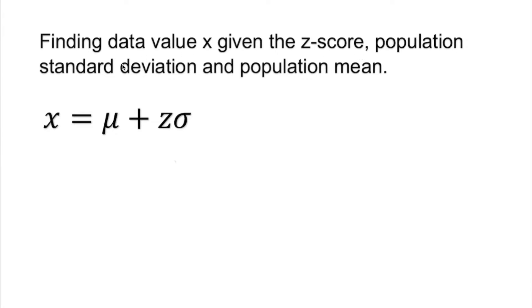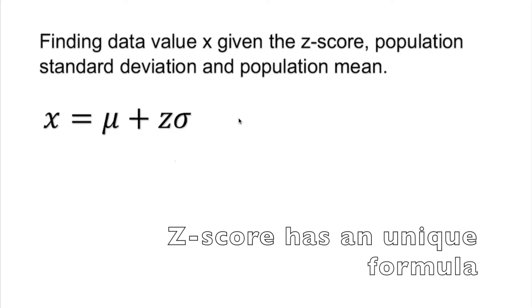Plug in the population standard deviation here, population mean here, do a little arithmetic, and your answer is there. Now if we are not lucky and we are not given this formula, then which formula are we going to use? Of course, the z-score formula. Z-score equals the data point minus the population mean over standard deviation.